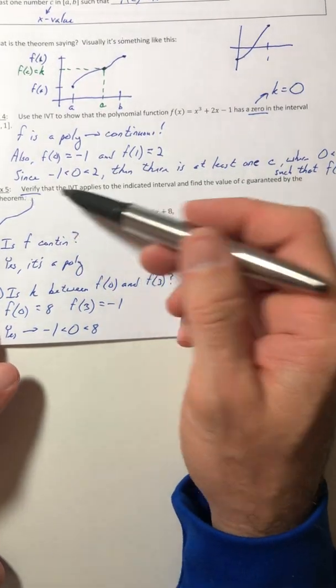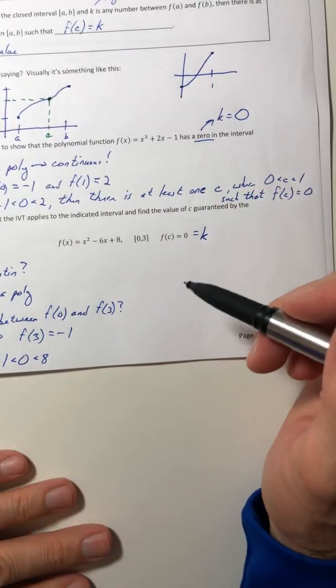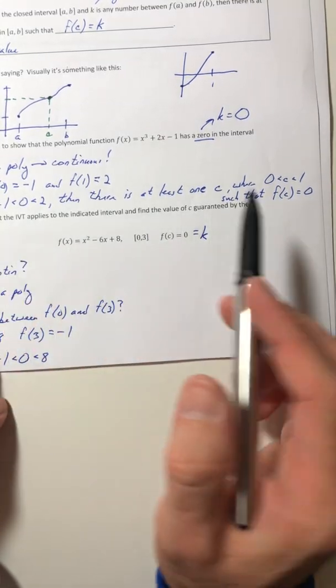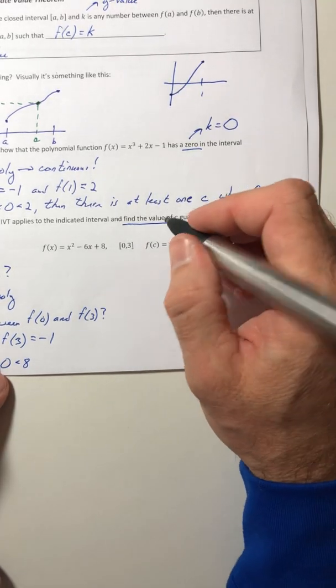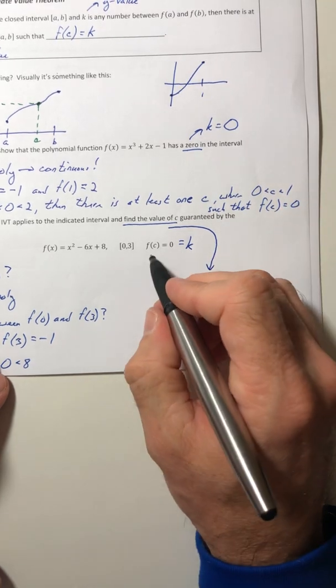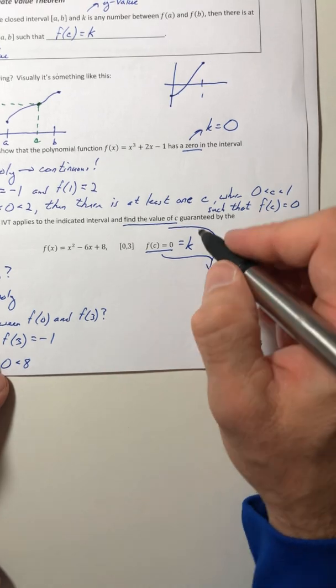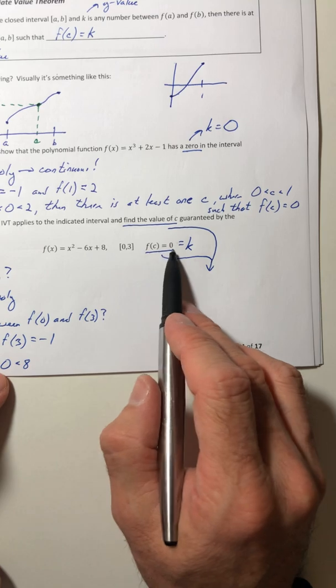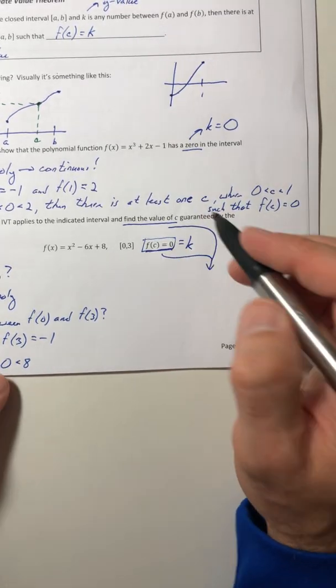And do you have to do this if it says verify? Yes, you do. Alright, then the last part, find the value of c guaranteed by the theorem. So you're going to use, or for that, you're going to solve this thing out. So find the value of c. Well, this is where they're talking about. This is where you go to solve it. So solve this little equation right here. f(c) is equal to zero.